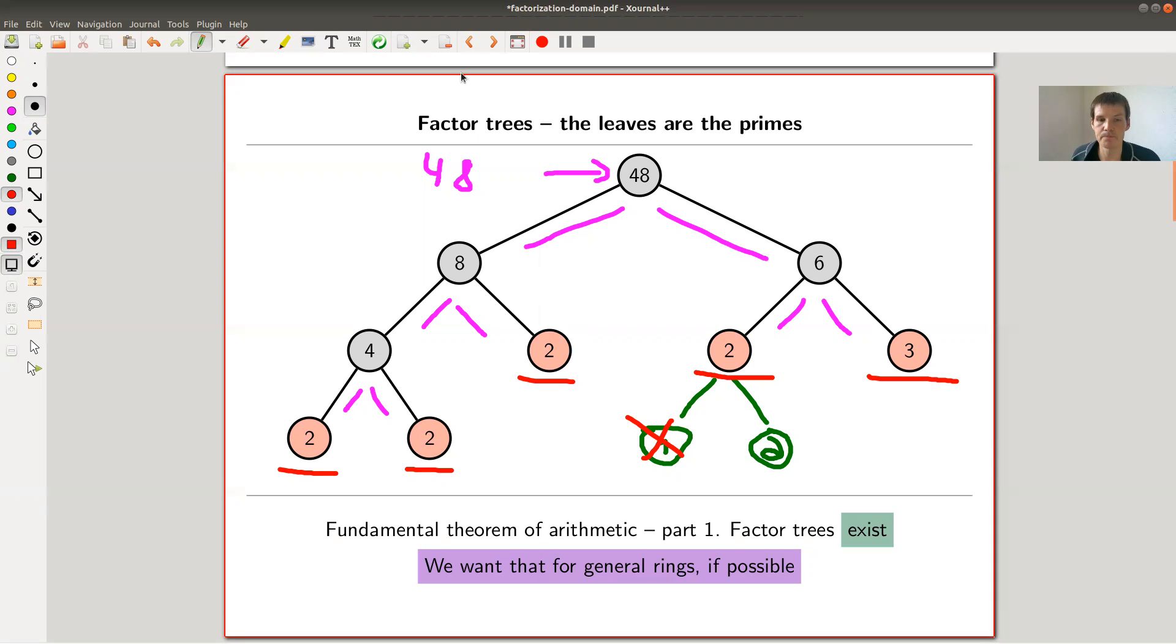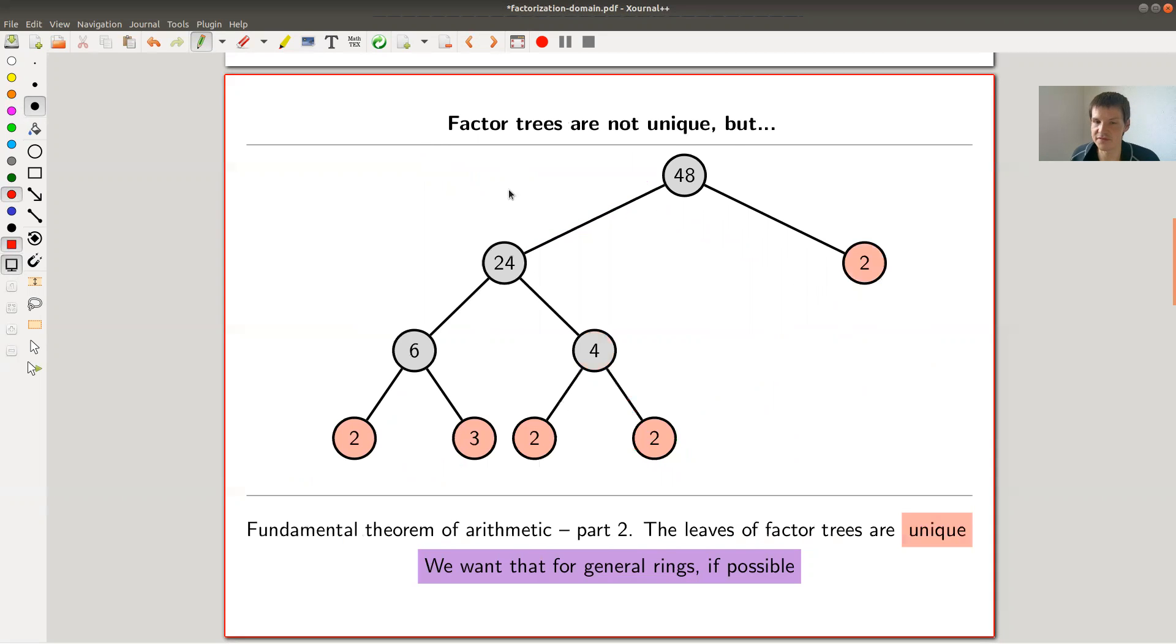Let me show you another factor tree of the same number. So it's again 48. But now I decided to split it differently. It's 24 times 2, of course. So with 2, I'm already stuck. So it's good. So it's a prime. And now I can split 24 further, 6 times 4, and so on.